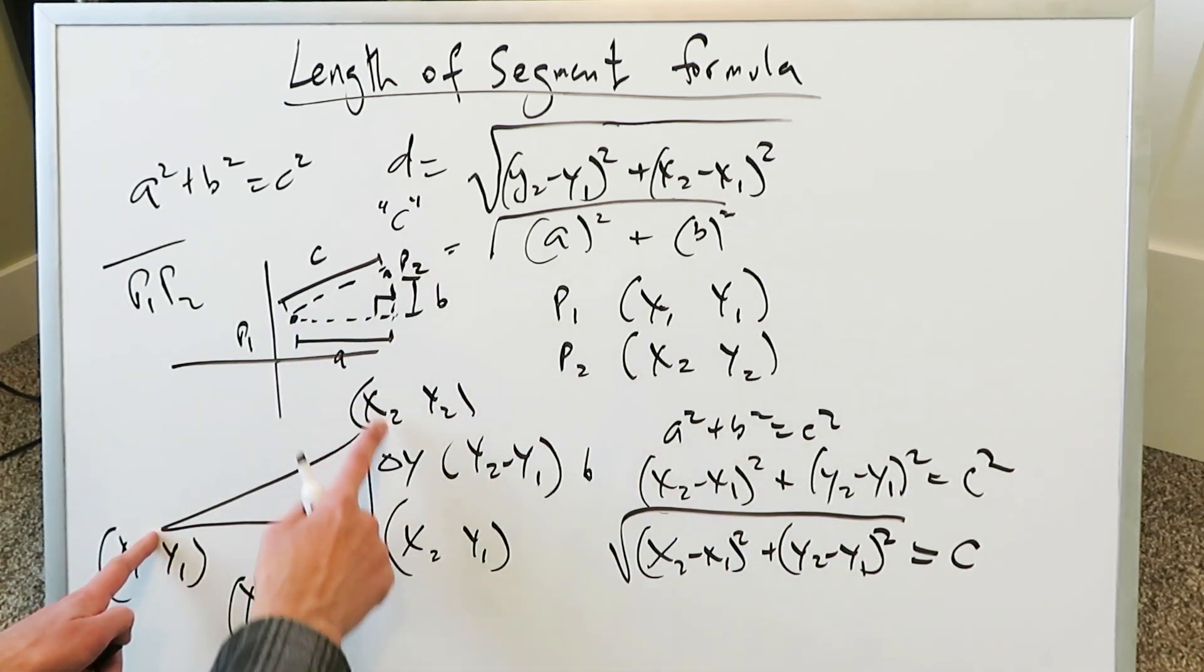Remember, everything here is being viewed as a right triangle. And again, think about here the coordinate pairs: x1, y1, x2, y1, x2, y2.